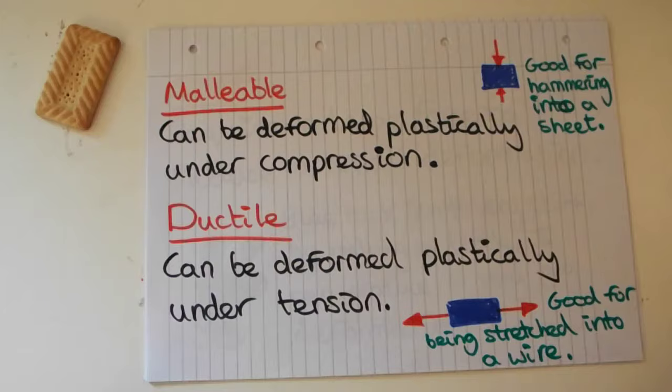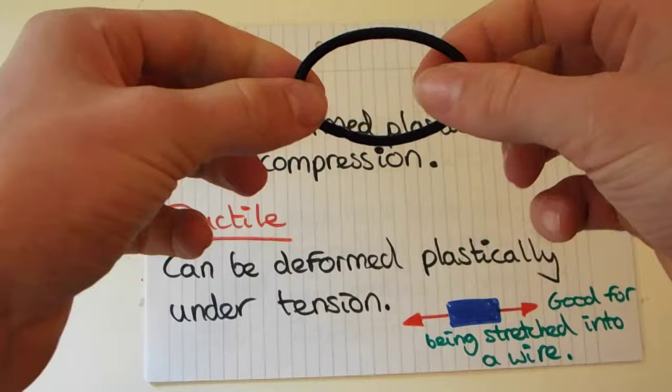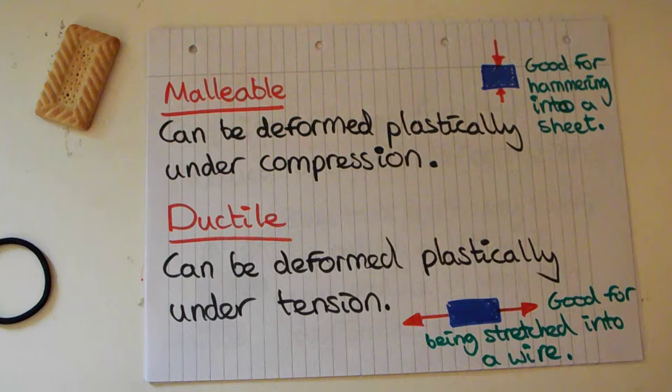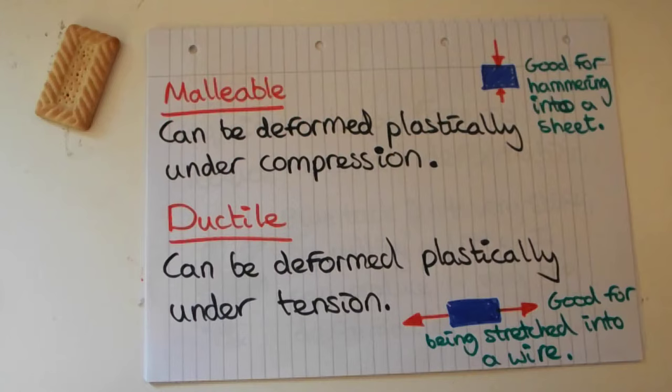There are different types of deformation. Something that's malleable is good for being deformed plastically under compression — for example, hammering metal into a shape like a car door. Whereas something that's ductile you might want to use for wires, because it can be deformed plastically under tension. So if I pulled on a bit of copper I could get wire out of it by stretching and deforming it plastically into its new shape.